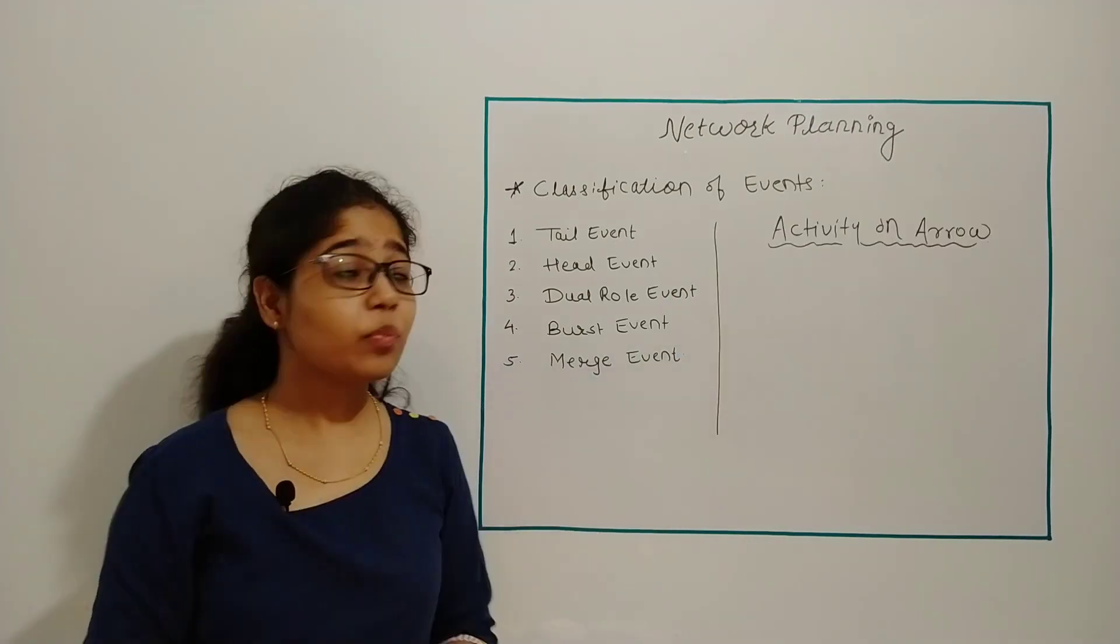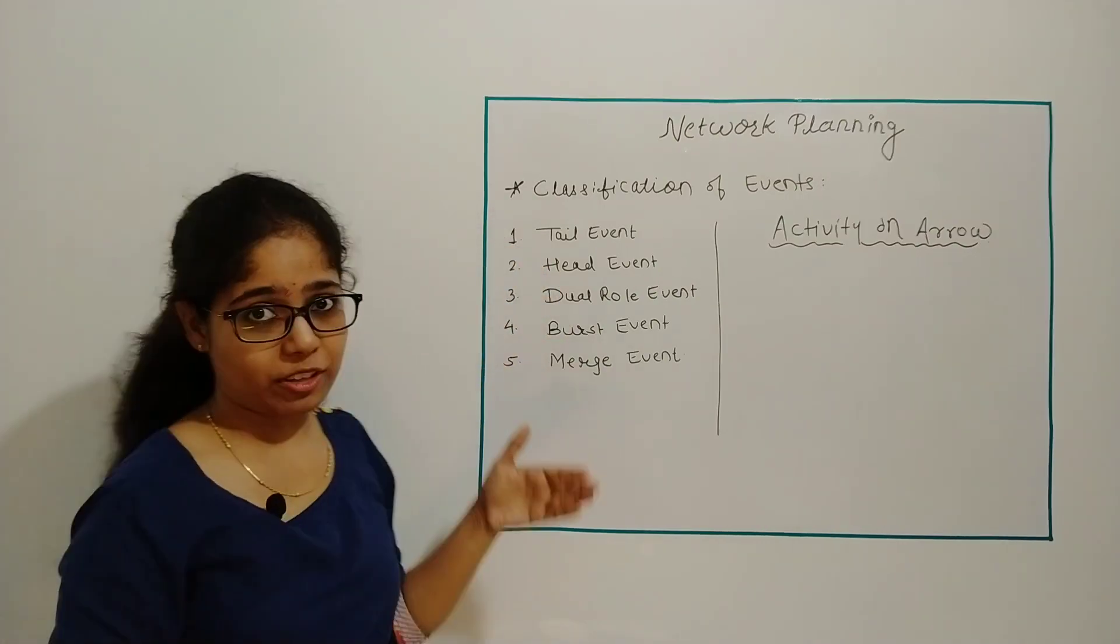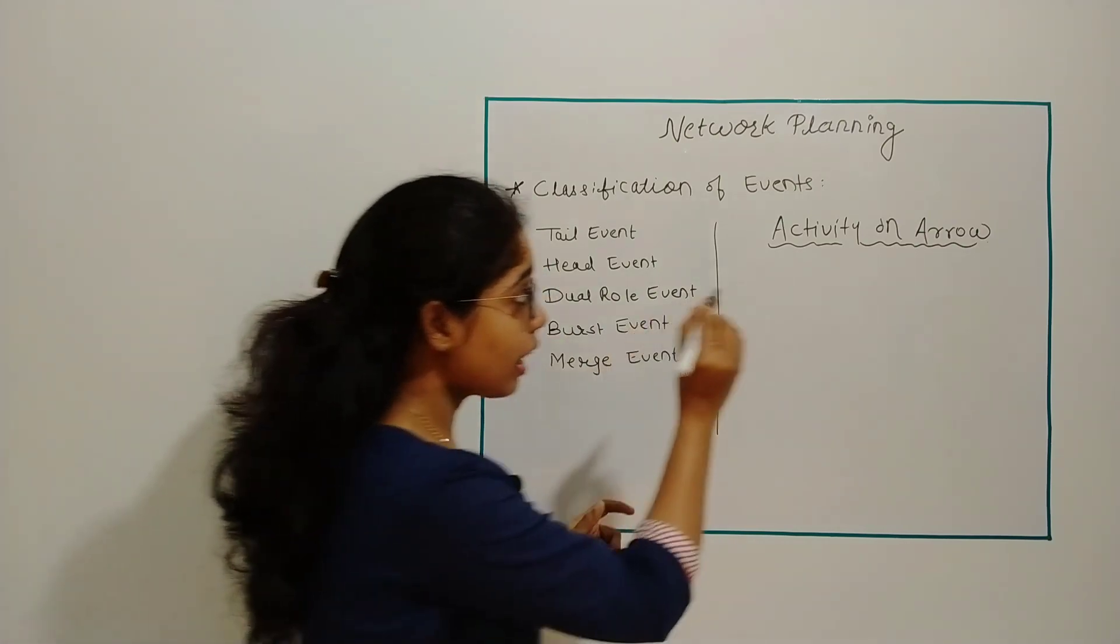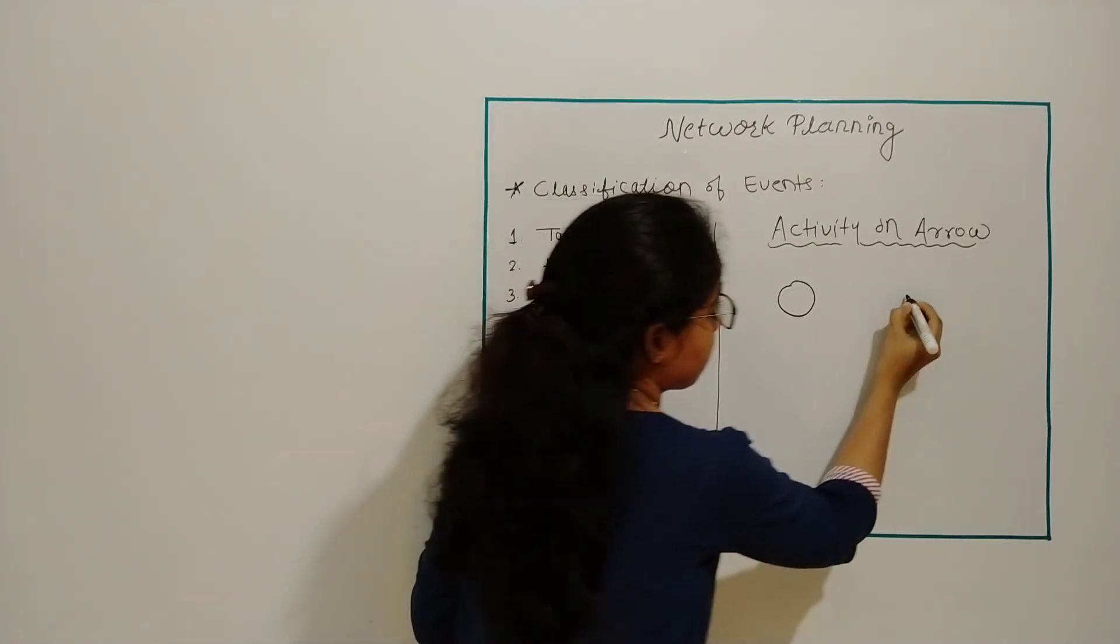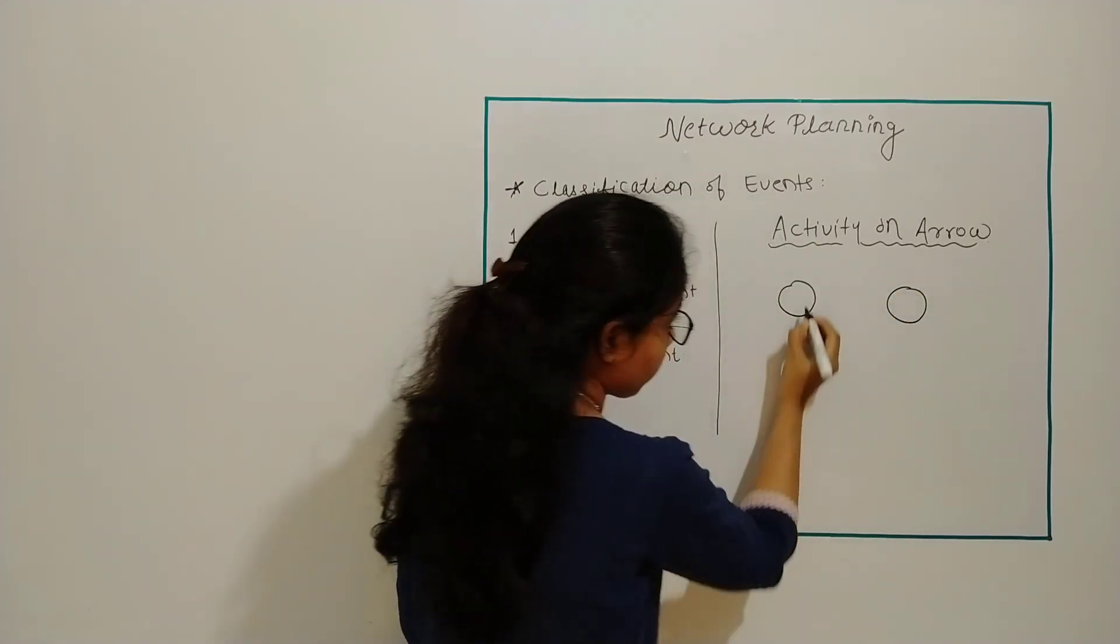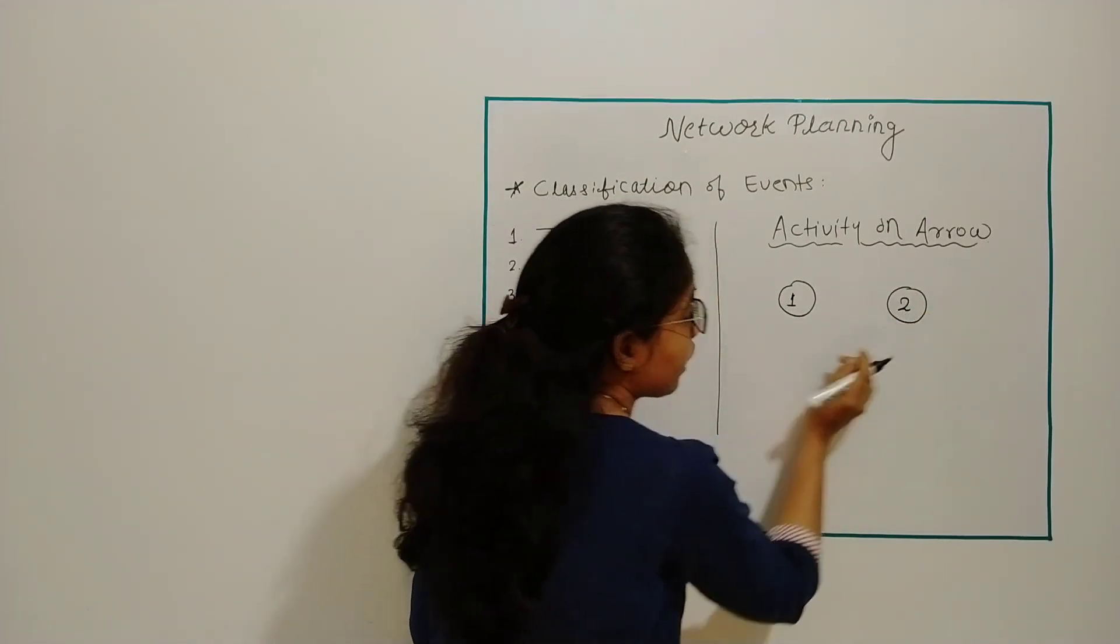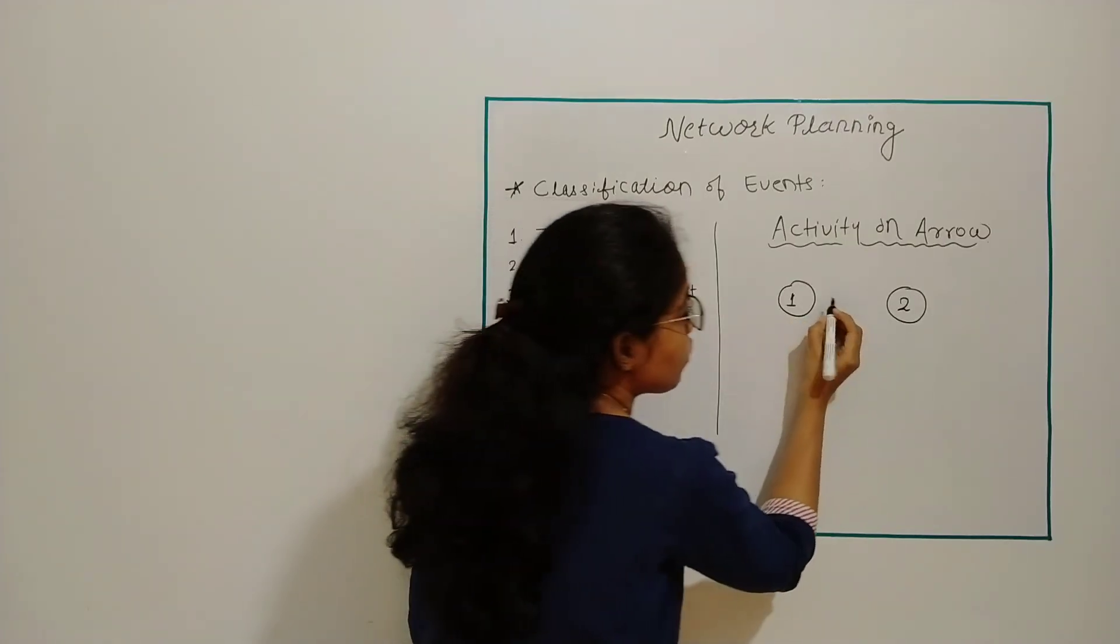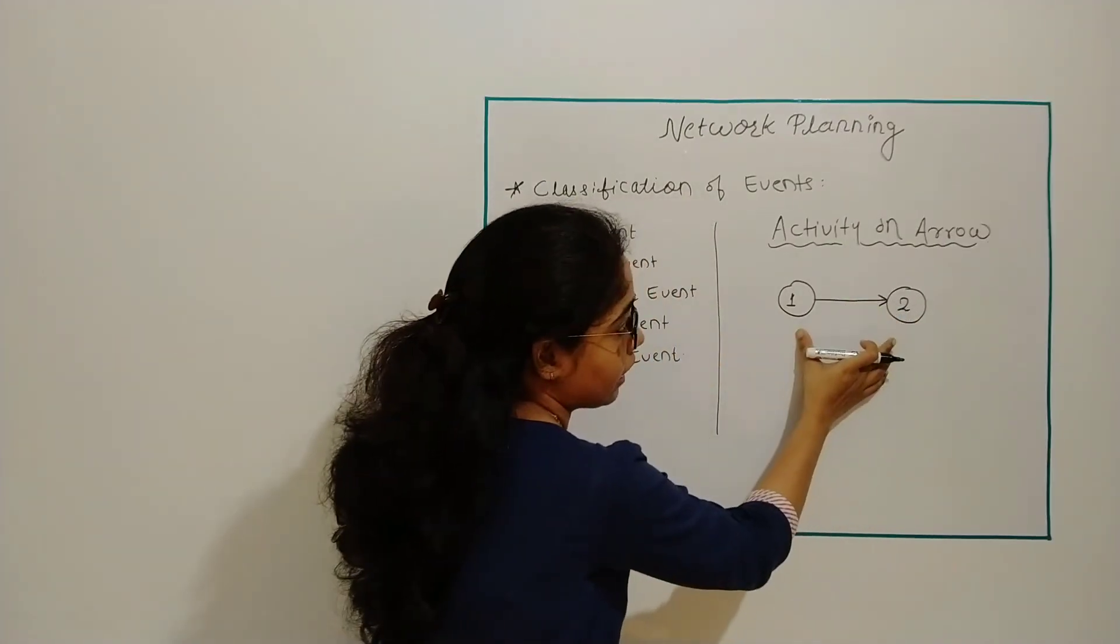Under activity on arrow we have to see these five classifications. Suppose this is your first node and this is your second node. Let me assume it number one and this is number two. If I am joining these two nodes with the help of one arrow, this is your activity.